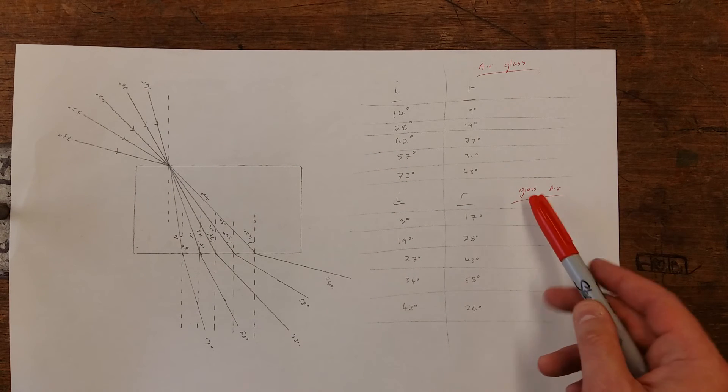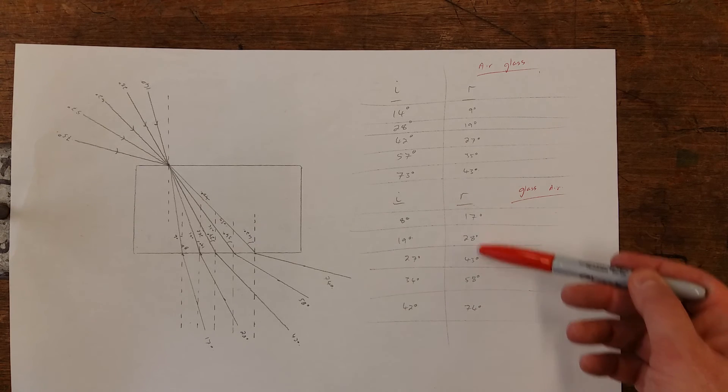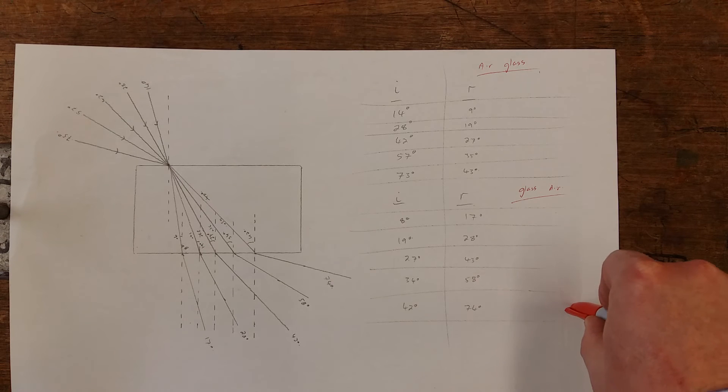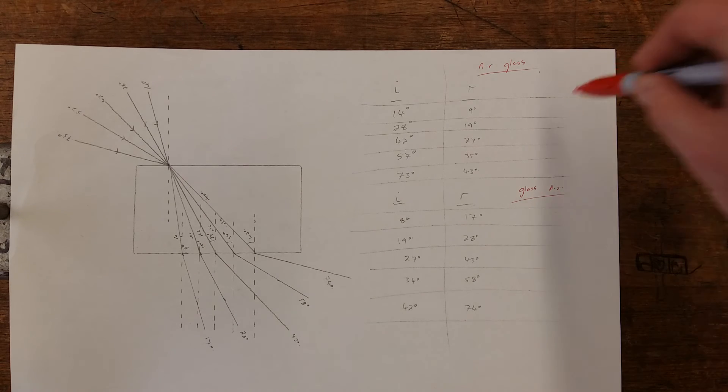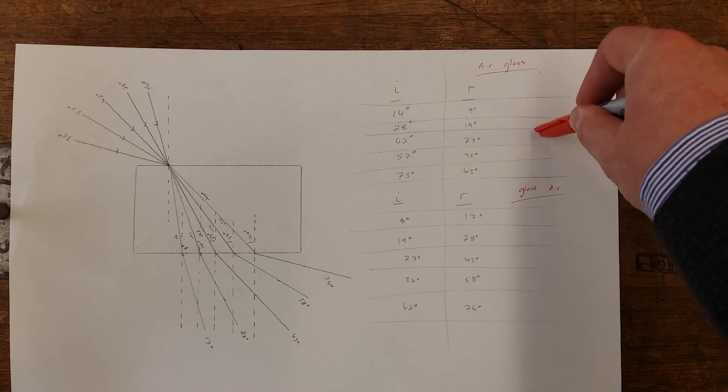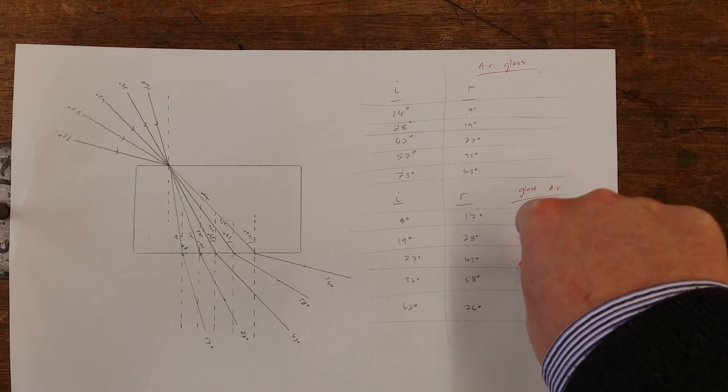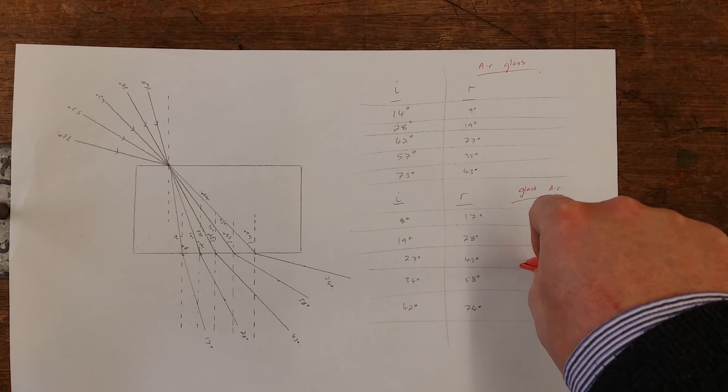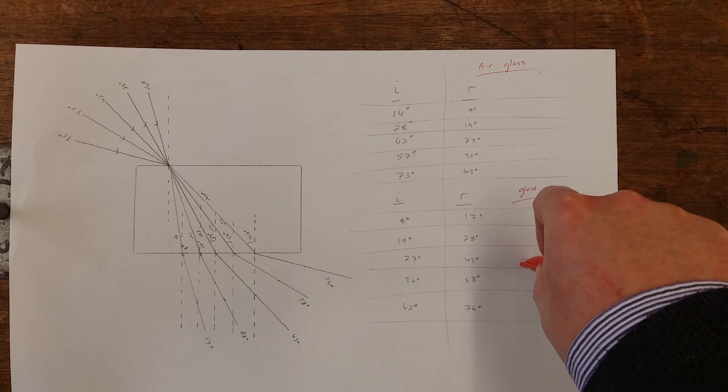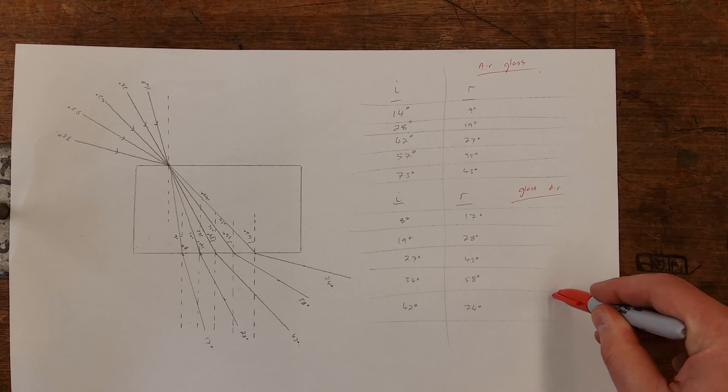And then once again where we've got glass to air, incident and reflected ray, because it's now leaving the glass block, the refracted ray is higher, which is what you'd expect. Light slows down in an optically more dense medium, hence you get the refraction. Light speeds up as it leaves an optically more dense to a less dense medium, such as moving from glass to air or water to air. That's why you see the difference in results.